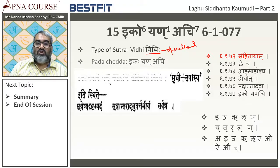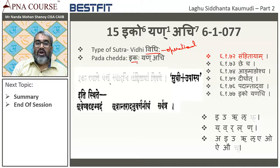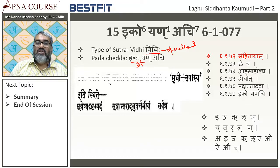The next job is Padacheda — splitting the Sutra before making any sense of it. The Visarga has become Okaram here. It is actually Ikaha, Yan, and Achi — so Iko Yan Achi is the Padacheda.